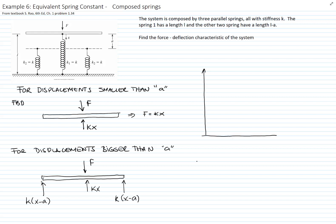If I draw a graphic for F versus x, this is a piecewise function where for displacements smaller than a, I have the linear graph that is k times x, and for a, that equals ka, the slope is k.